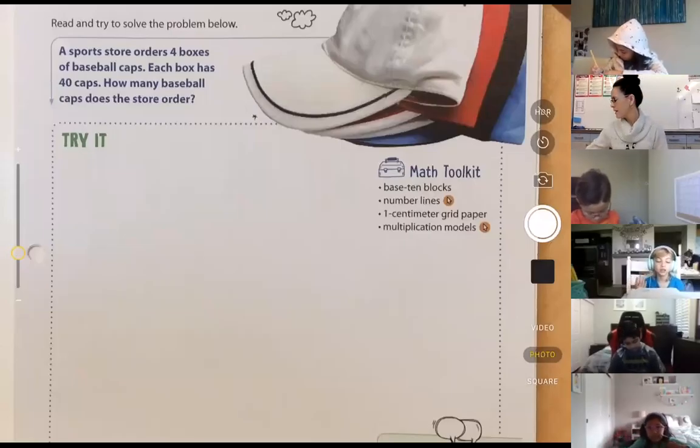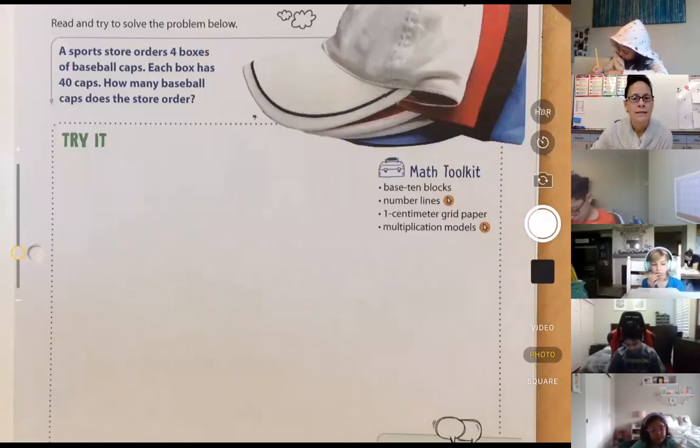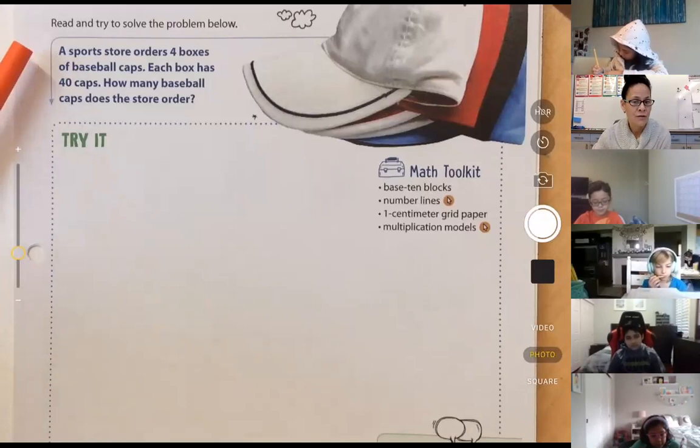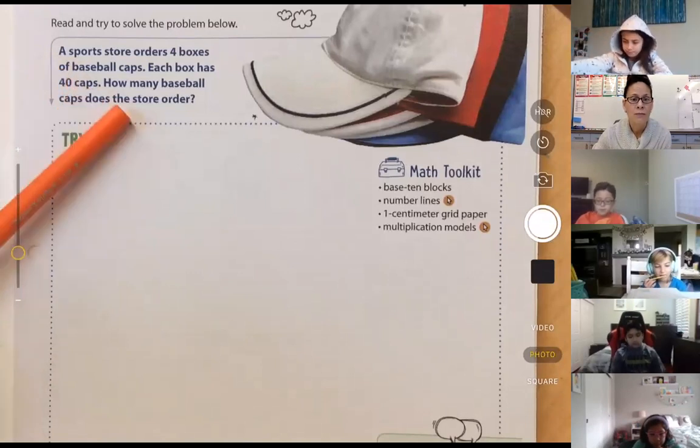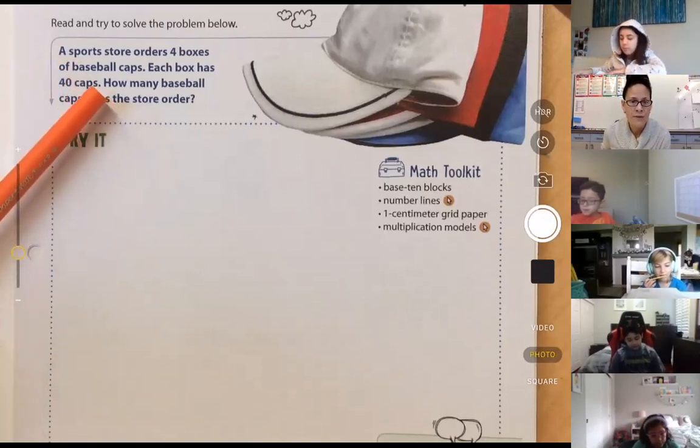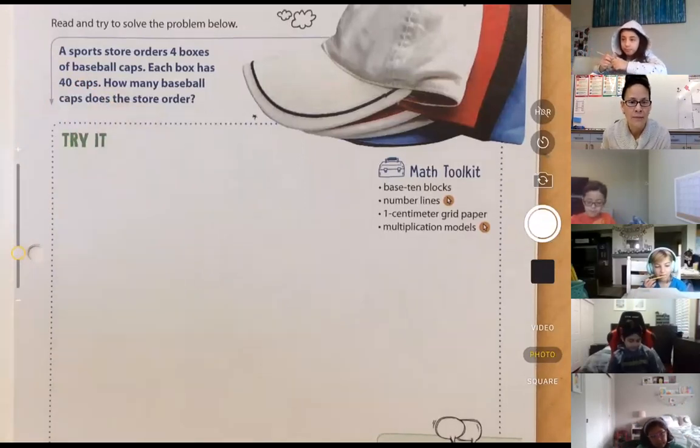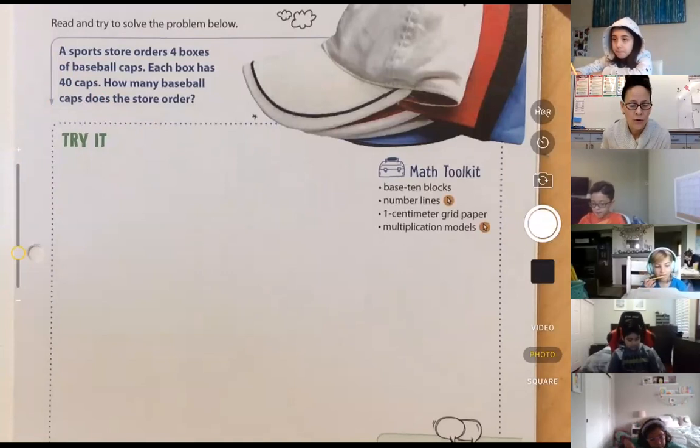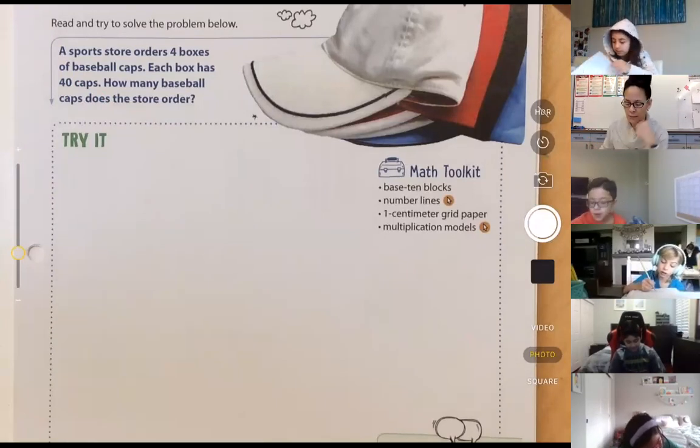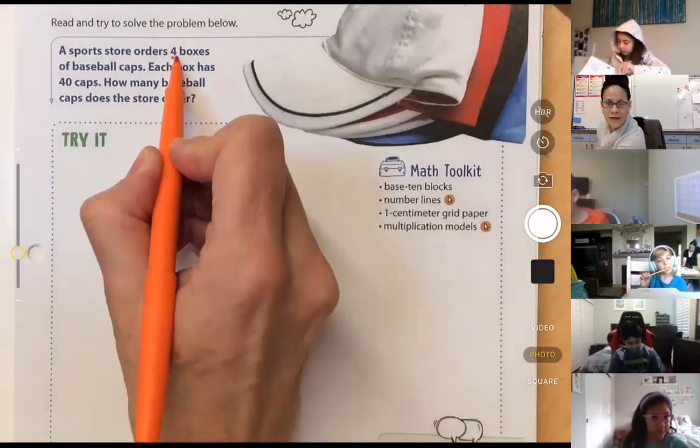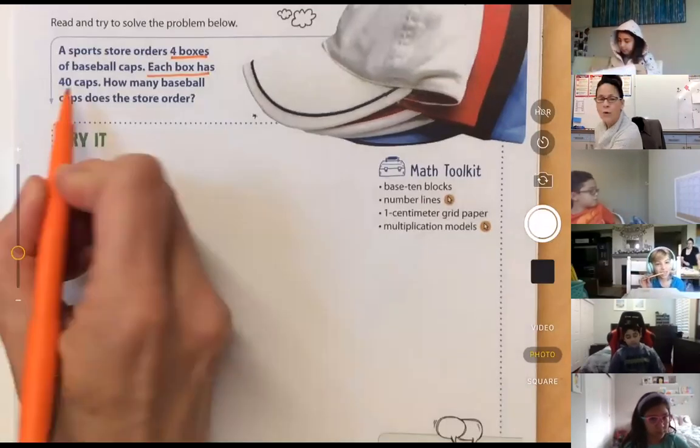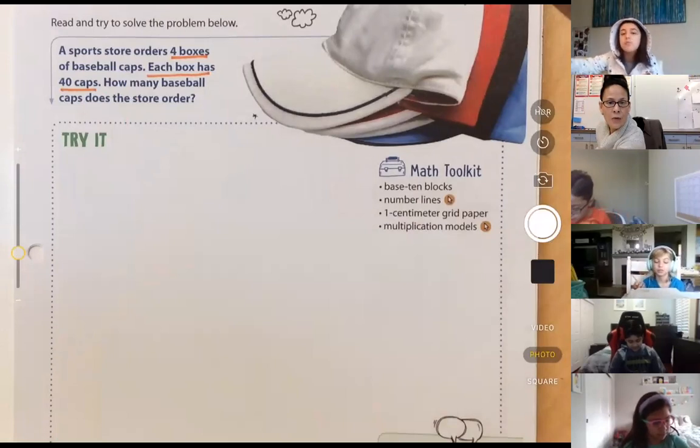All right, so at the top on page 215, you're going to see the text feature of bold print. Super important. Here we go. A sports store orders four boxes of baseball caps. Each box has 40 caps. How many baseball caps does the store order? So friends, when we read, we need to pull out that important information to help our brains. We have four boxes or groups, and each box has 40 caps.